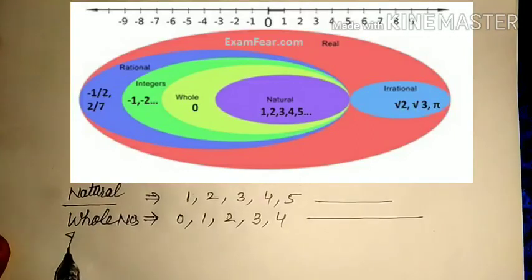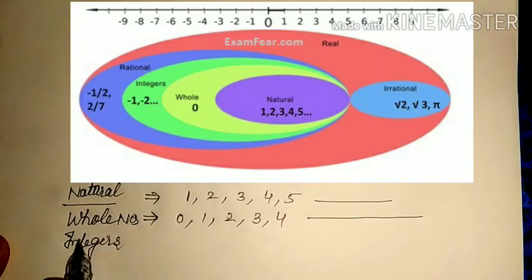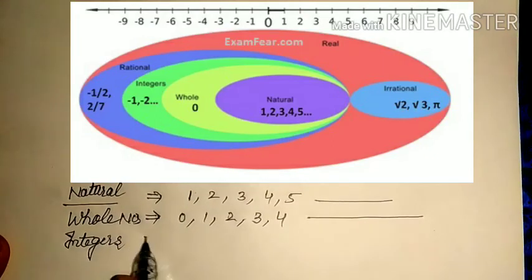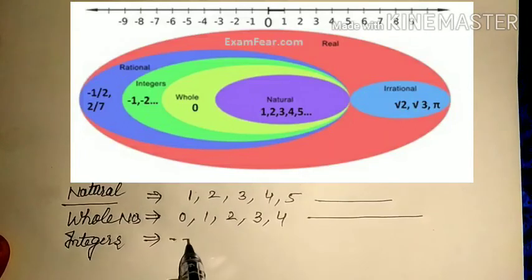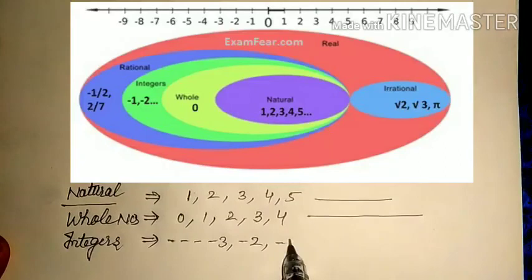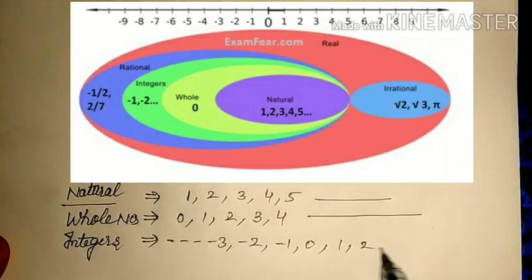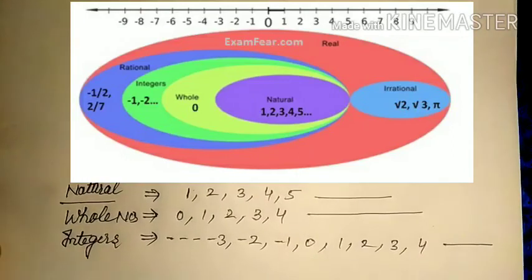If we have positive and negative numbers along with zero — for example, dot dot dot minus three, minus two, minus one, zero, one, two, three, four — this is our integer set.